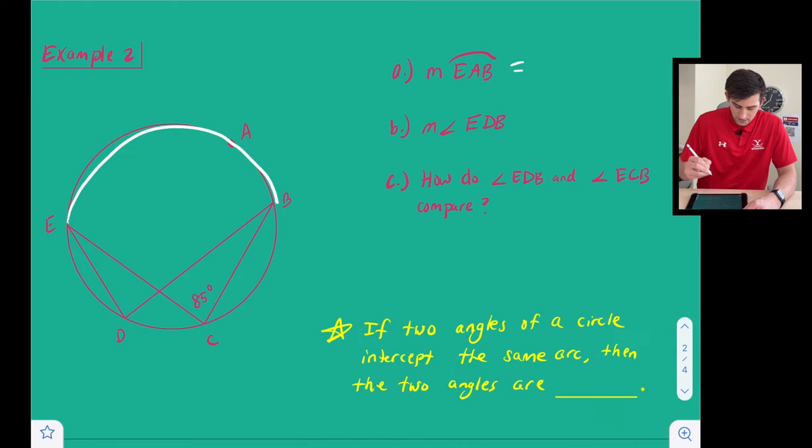Well we see that we have angle 85 degrees right there. So we can multiply 85 times 2 to find the measure of that major arc. And that's going to be 170 degrees.